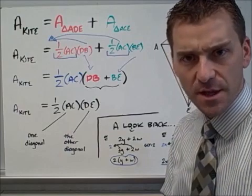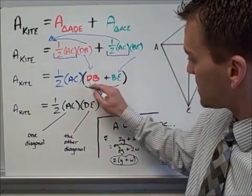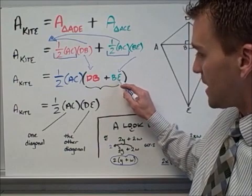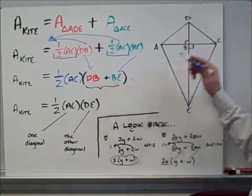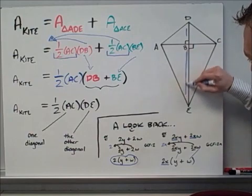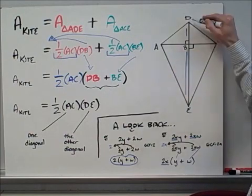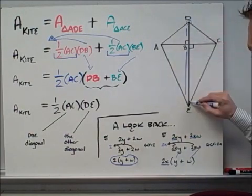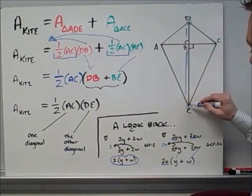Who cares, Mr. Monter, why is that important? Take a look. If I look at what DB plus BE actually is in the picture that's over here, DB is this piece, BE is this piece. Now what is that? Oh, that whole thing from D down to E is actually one diagonal of the kite.